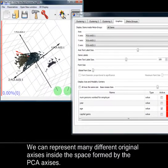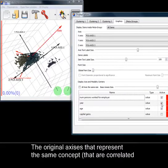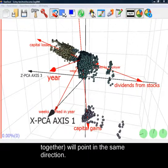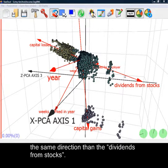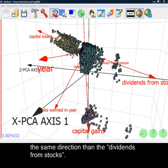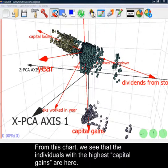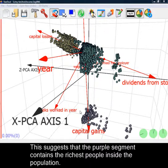We can represent many different original axes inside the space formed by the PCA axes. The original axes that represent the same concept, they are correlated together, will point in the same direction. You can see that the capital gain is in the opposite direction of the capital losses and is more or less in the same direction than the dividends from stocks. From this chart, we see that the individuals with the highest capital gains are here. This suggests that the purple segment contains the richest people inside the population.